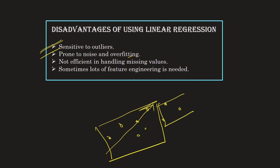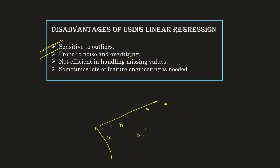The testing data is used to check whether the line we have drawn is actually good at predicting values close to the actual value. If your line is predicting very well with training data but not doing well with testing data, that is a typical example of overfitting, which we always try to avoid in machine learning and data science.